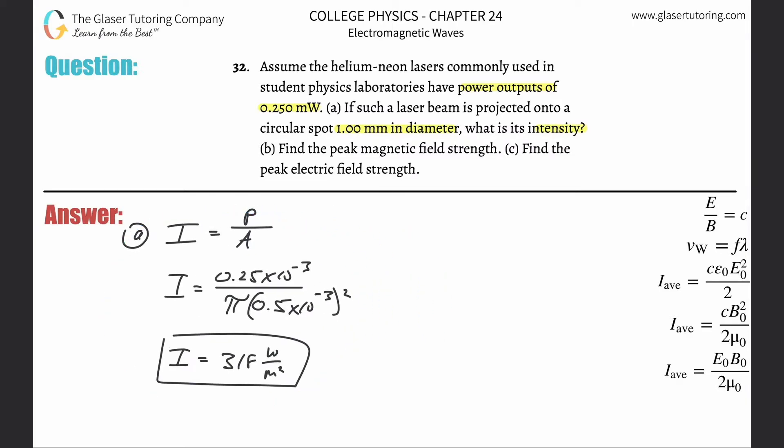What do we got now coming up for letter B? Well, it says find the peak magnetic field strength. So now that we know the intensity, how can we find the peak magnetic field strength? We need a formula that relates the two.